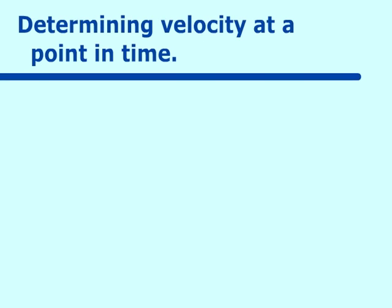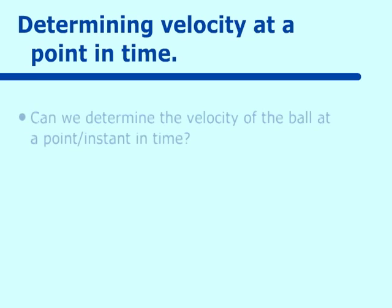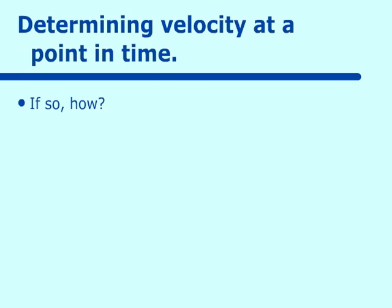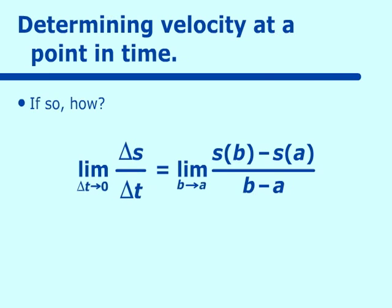We want to determine the velocity at a point in time. If you know anything about calculus, you know the answer is yes, we can do this. We look at a limiting idea — we'll talk about limits a little bit later. What we do is take that average change in distance over change in time and limit the change in time to being almost zero. So if you think of it as a very quick change in time, you get instantaneous rate of change. That is equal to the limit as B approaches A of S(B) minus S(A) over B minus A.